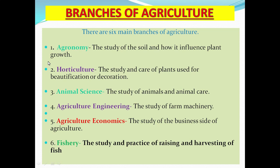Number one, agronomy: the study of the soil and how it influences plant growth. Number two, horticulture: the study and care of plants used for beautification or decoration. Persons who cultivate flowering plants such as hibiscus and bougainvillea are in the horticulture field. Number three, animal science: the study of animals and animal care. Number four, agricultural engineering: the study of farm machinery and tools.